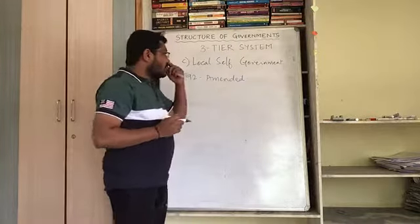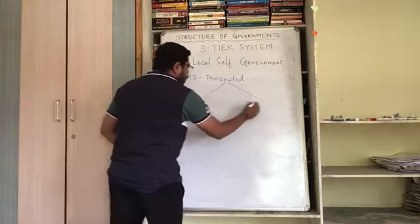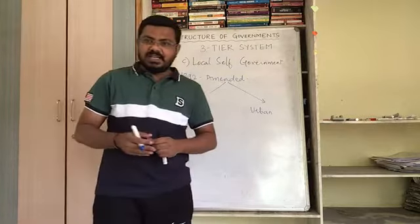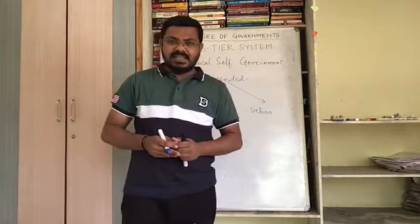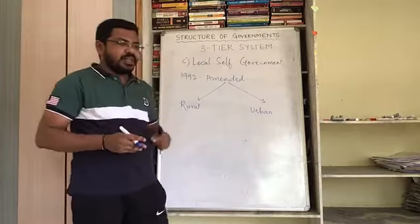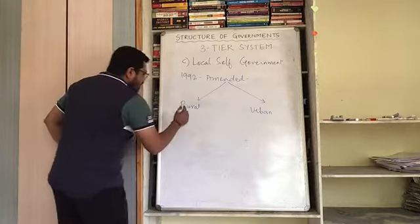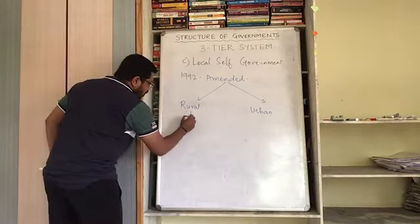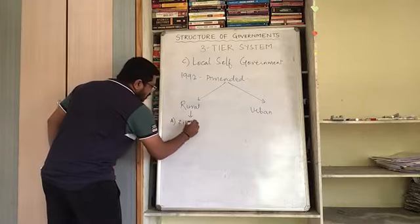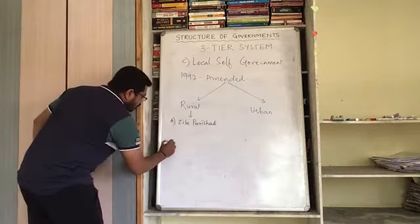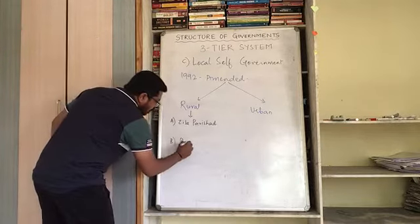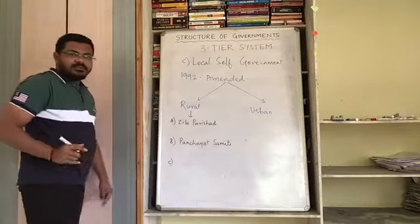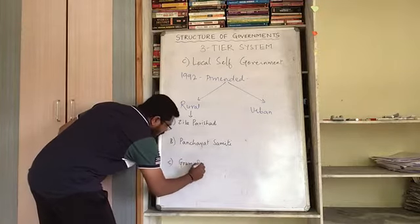Local self-government has two parts: it functions at the rural level and at the urban level. Rural means in the villages, and urban means in the cities and towns. The rural local self-government has three divisions: at the top there is Jilla Parishad, below that is Panchayat Samiti, and below Panchayat Samiti there is Gram Panchayat.